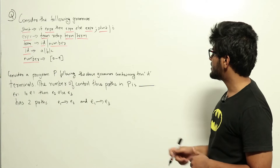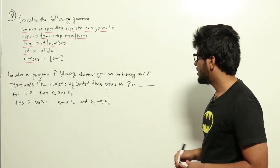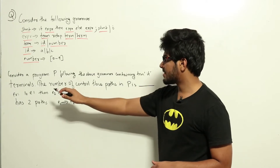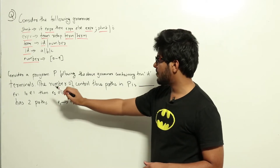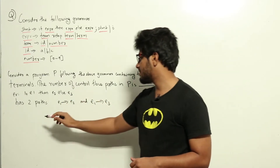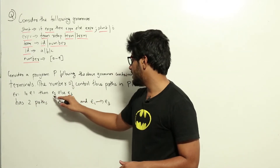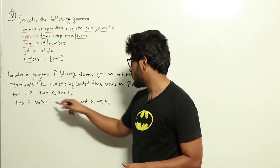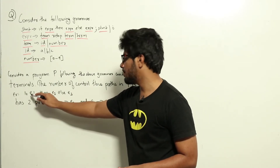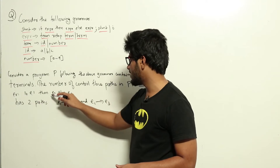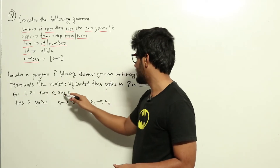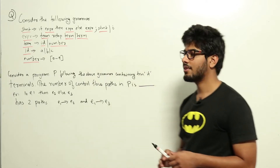Consider a program P following the above grammar containing 10 if terminals. The number of control flow paths in P is blank. They also give an example: if e1 then e2 else e3. That program has two paths — taking e2 when the condition is true, or taking e3 when the condition is false.